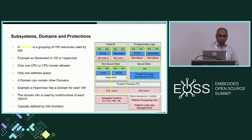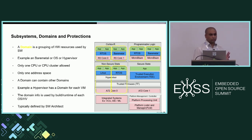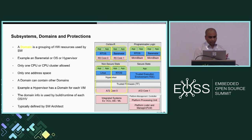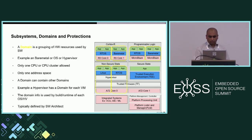Domains are a group of hardware resources used by software — for example, bare metal, an operating system, or a hypervisor. Only one CPU or a cluster of CPUs is allowed per domain. A domain uses one address space, and a domain can contain nested domains — for example, a hypervisor. You can run Xen dom0 on an APU and domU on an RPU. Domain information is used at build time or runtime for each operating environment or hypervisor, and is typically defined by the software architect.